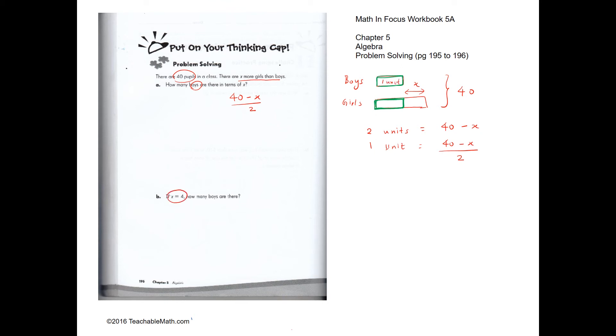If x is equal to 4, how many boys are there? So if x equals to 4, 40 minus x over 2 would be 40 minus 4 divided by 2, which is 36 divided by 2, which is 18.